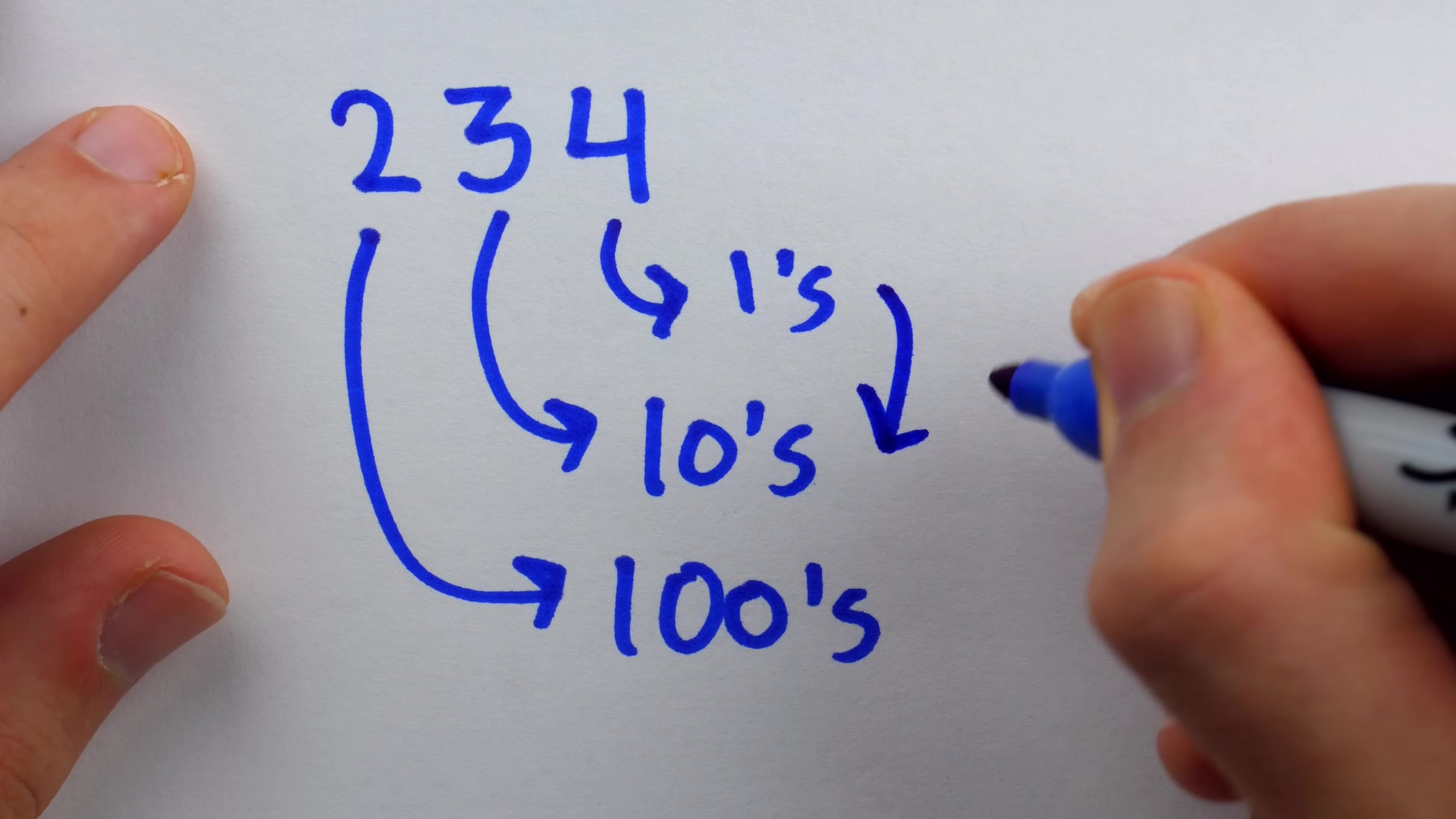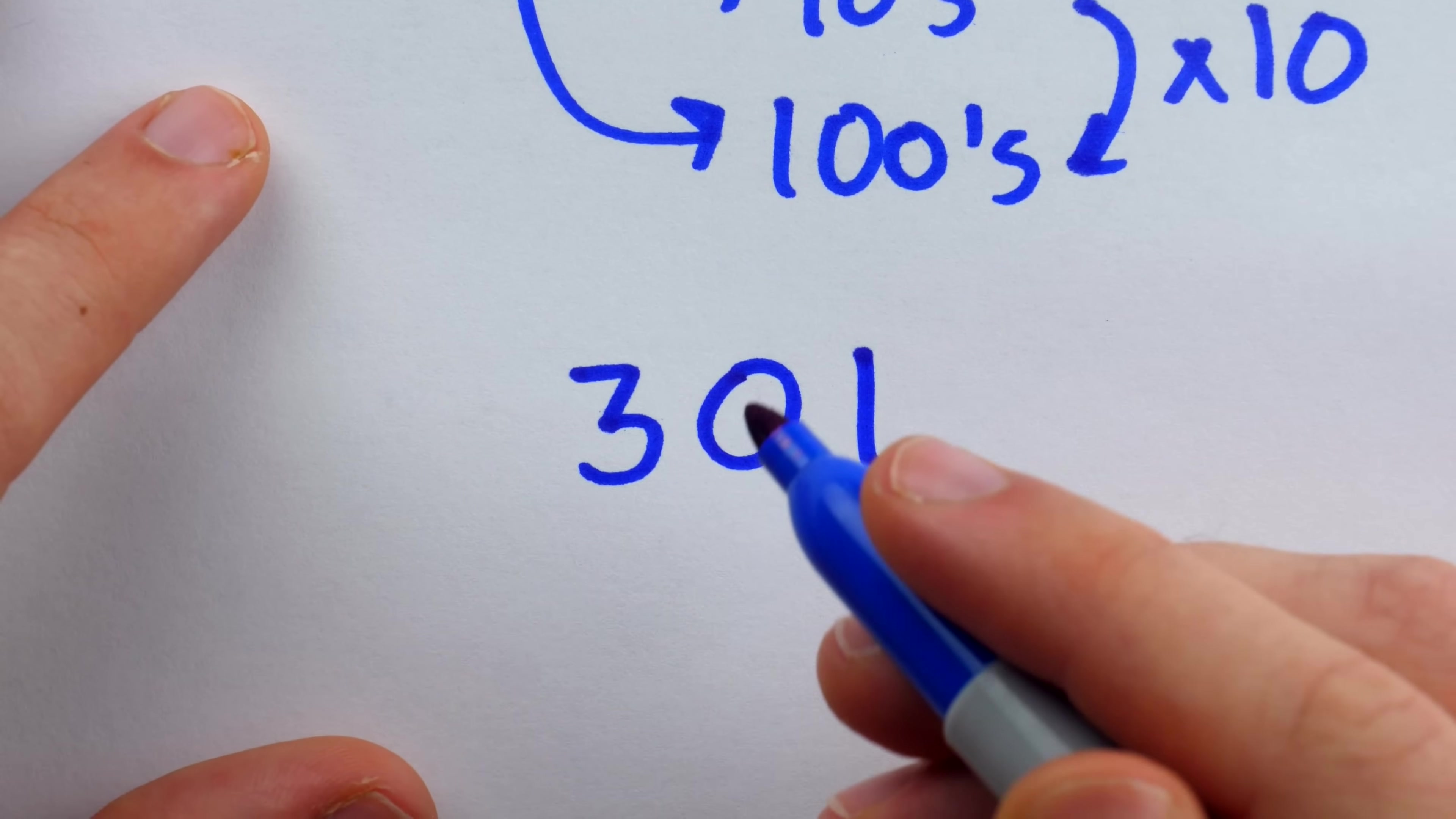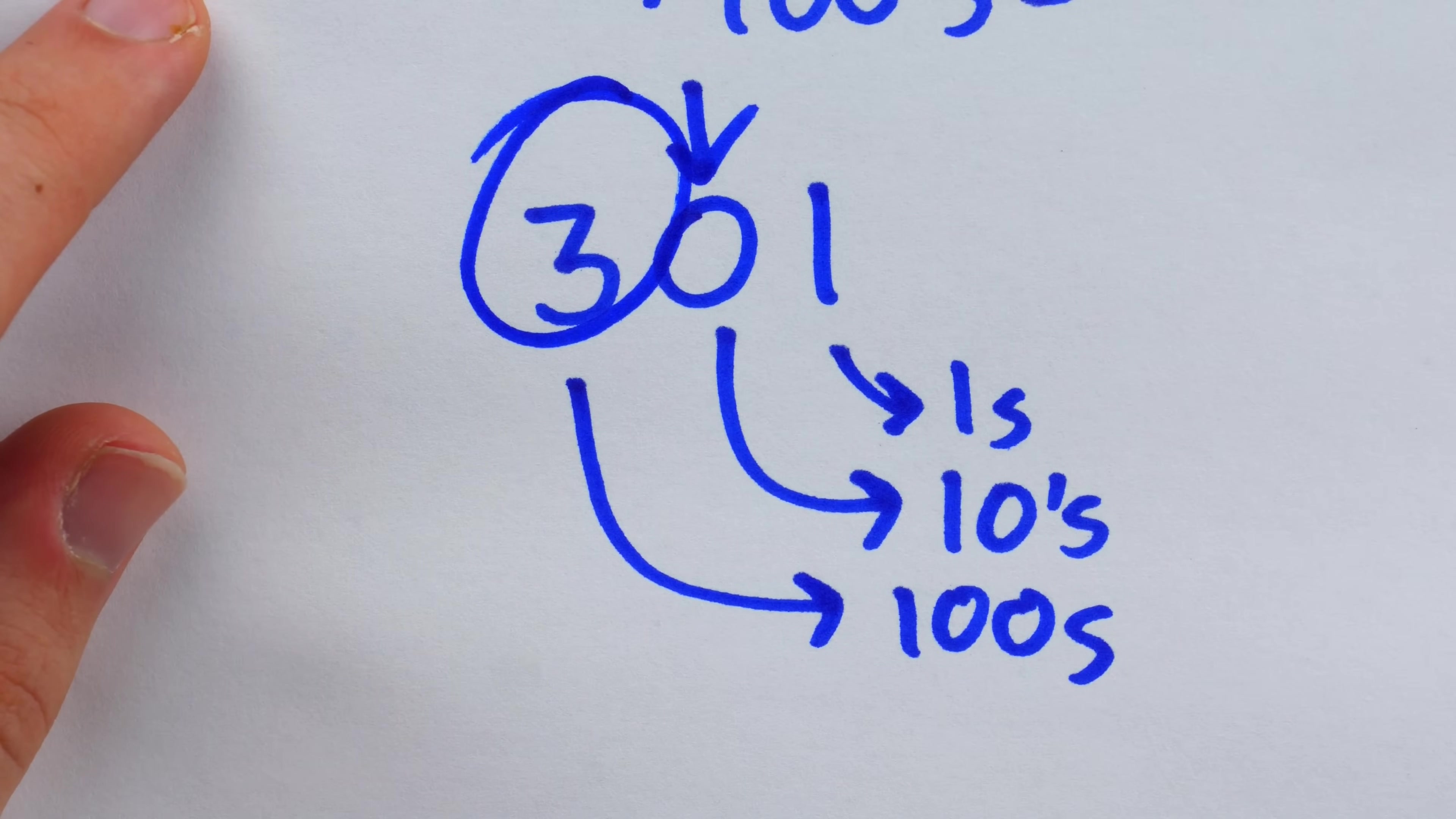Each place value represents quantities that are 10 times bigger than the place value before it. And for a system like this to work, it's necessary to have a symbol for 0, a sort of placeholder for a place that actually doesn't have anything. This represents 301, where the 1 is counting in the 1s place, but the 0 is telling us that we have 0 10s. In order to get to the 3, which represents three 100s, we need to have some symbol to put here to represent the lack of 10s, so that we're able to get to the 100s position.